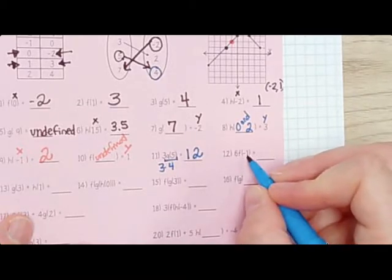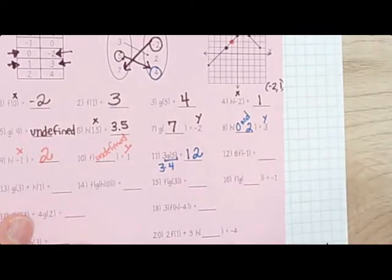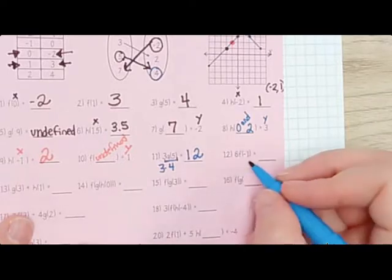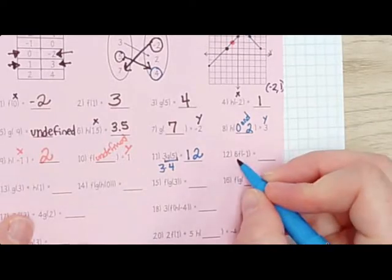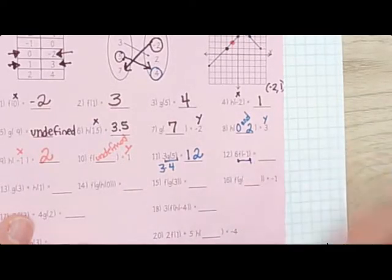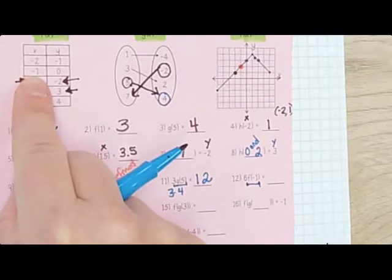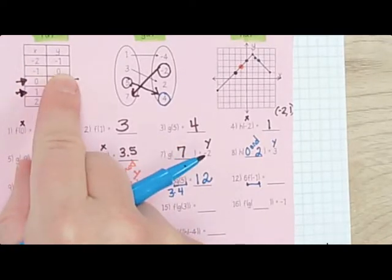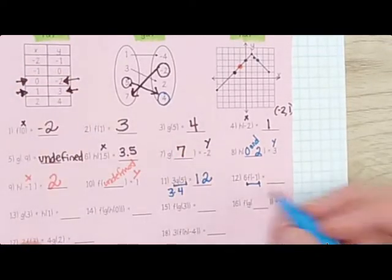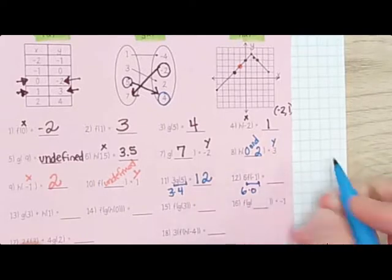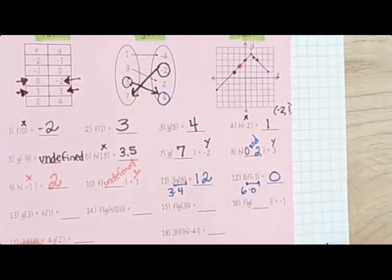6·f(-1). I need to go to f at negative 1 — what do I get? 0. So I do 6 times 0, which gives us 0.